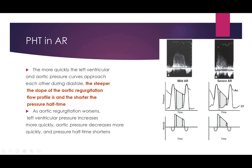More quickly the LV and aortic pressure curves approach each other, the shorter the pressure halftime and the more severe the aortic regurgitation. As aortic regurgitation worsens, LV pressure increases more quickly, aortic pressure decreases more quickly, and pressure halftime shortens.